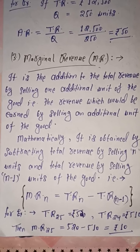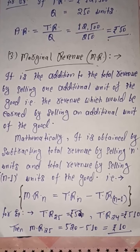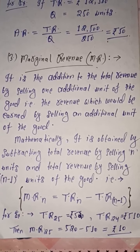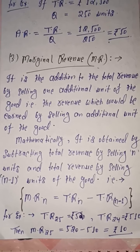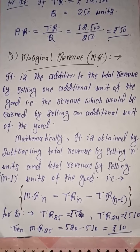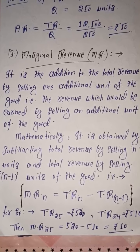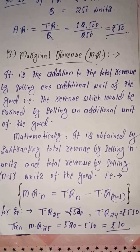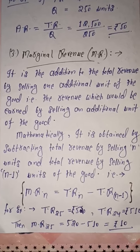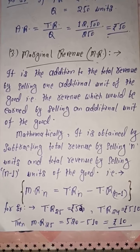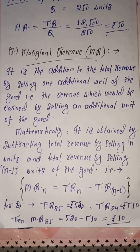To obtain this mathematically, from the total revenue obtained after selling n units, we subtract the total revenue obtained after selling n minus 1 units. This gives us the marginal revenue value of that particular nth unit. That is, marginal revenue is obtained by subtracting total revenue by selling n units and total revenue by selling n minus 1 units of the good. The formula is: MR of nth unit = TR of nth unit minus TR of (n−1)th unit.